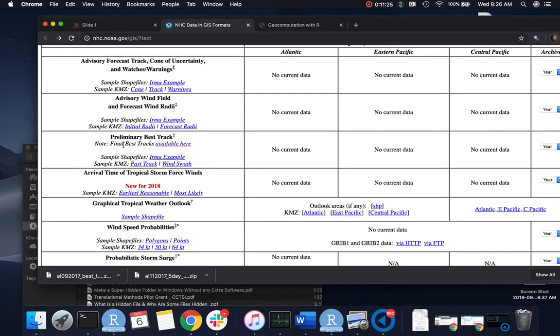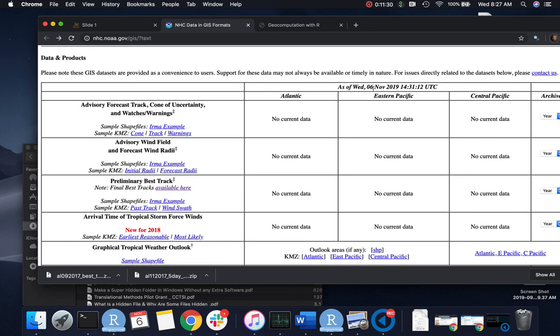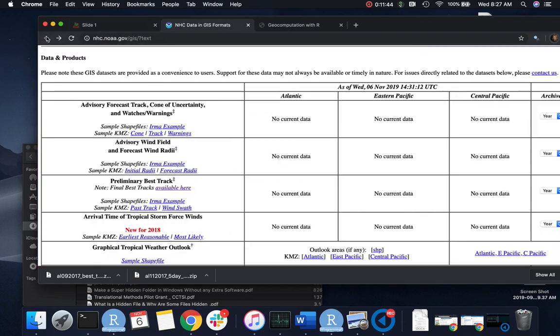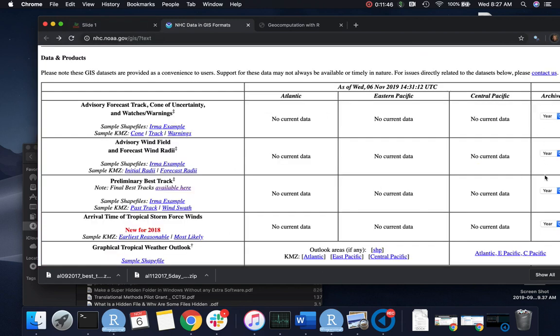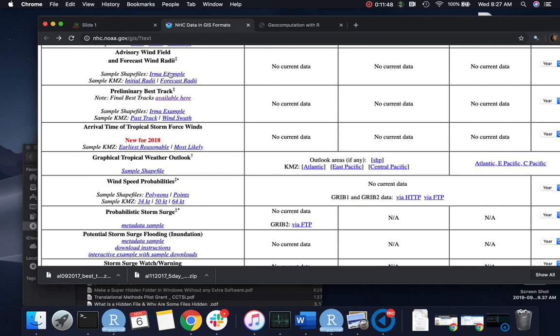So they've got information here on current storms and they have things like the forecast track, watches and warnings for the storm. They have the preliminary best track. So this is after the storm, the track of the storm. And you can see for all of these, it's got three different basins, the Atlantic Ocean, the Eastern Pacific and the Central Pacific. And right now we don't have any storms out there as I'm taping this. So there's no current data for any storms, but you can go in. Oh, sorry. You can go in and there's an archive. And then also for the preliminary best tracks, there's an archive of data here.